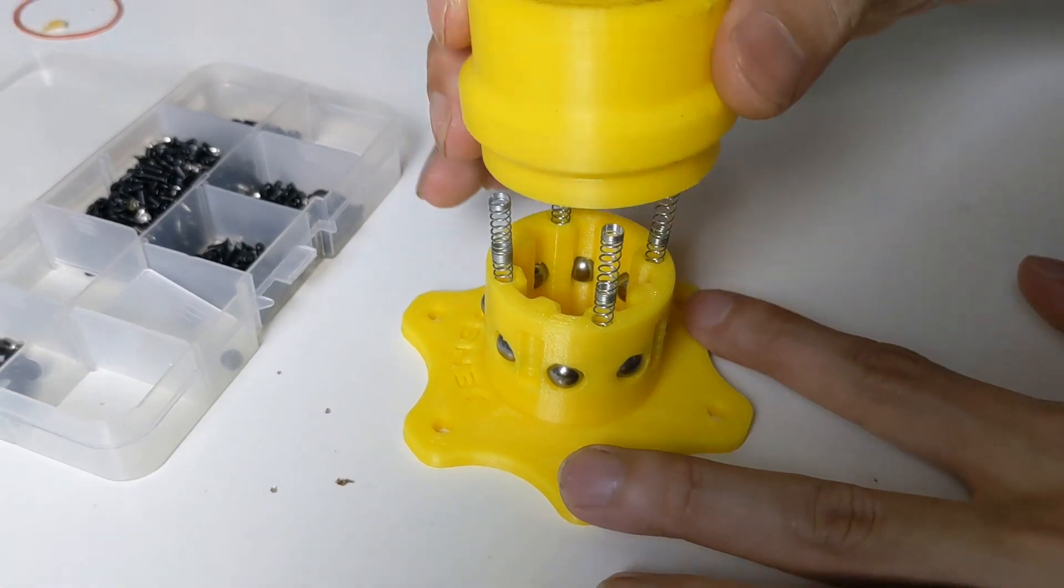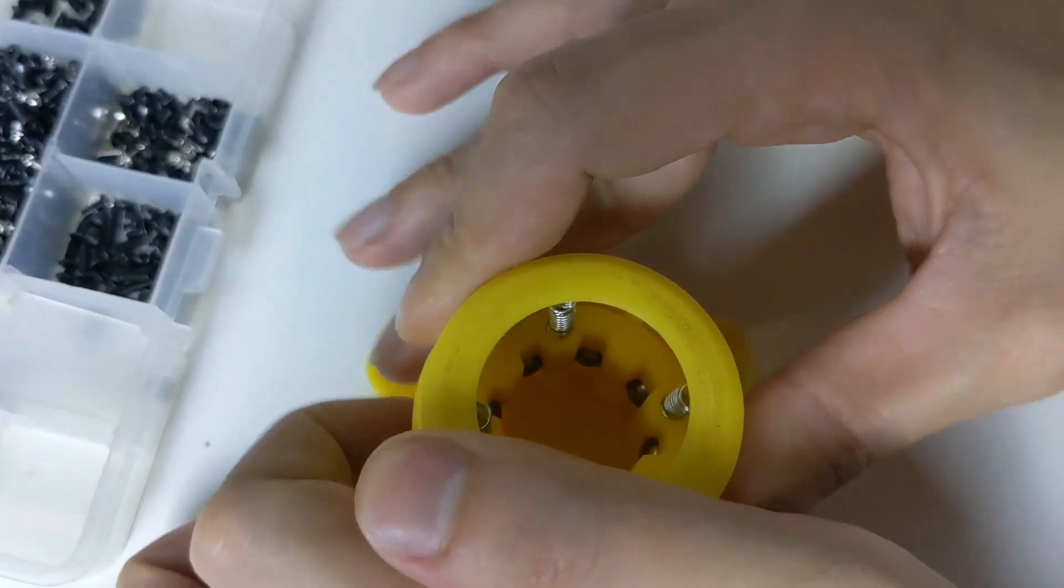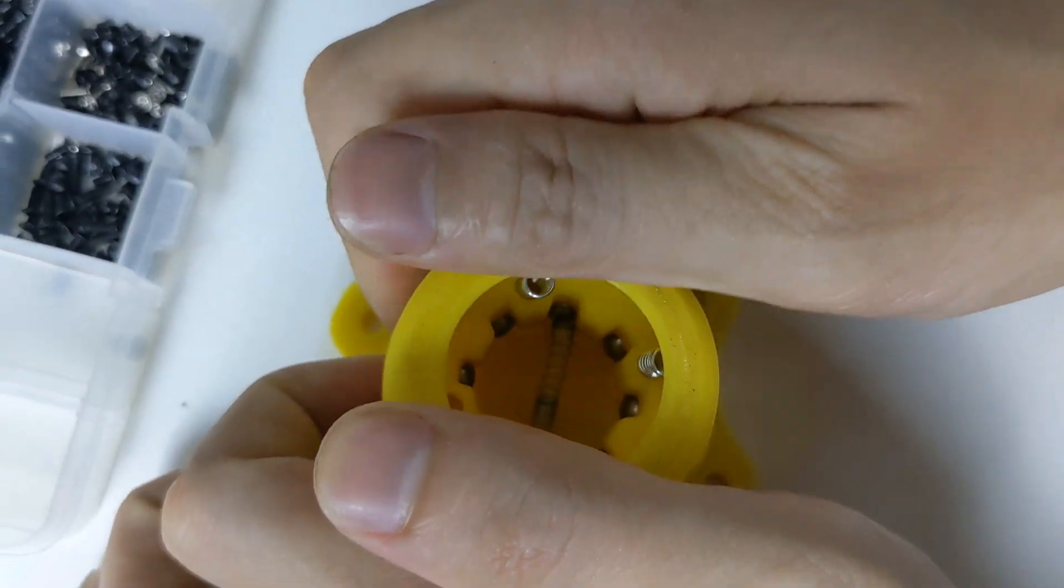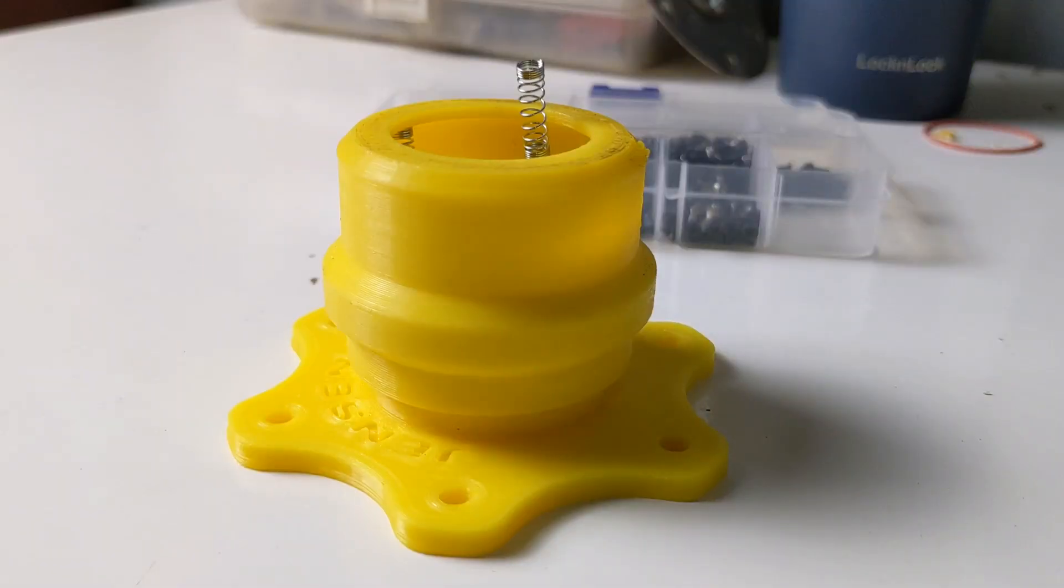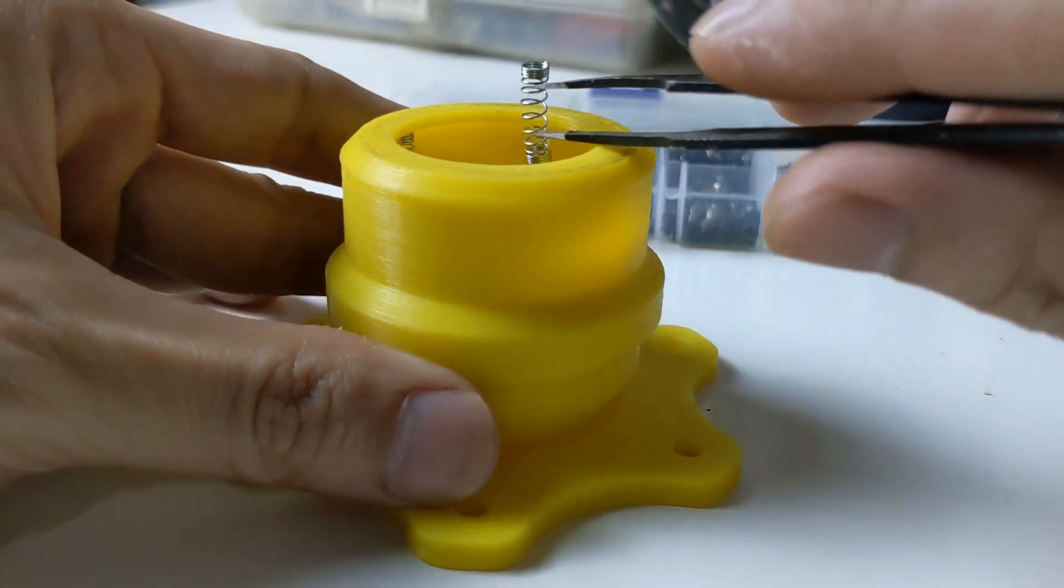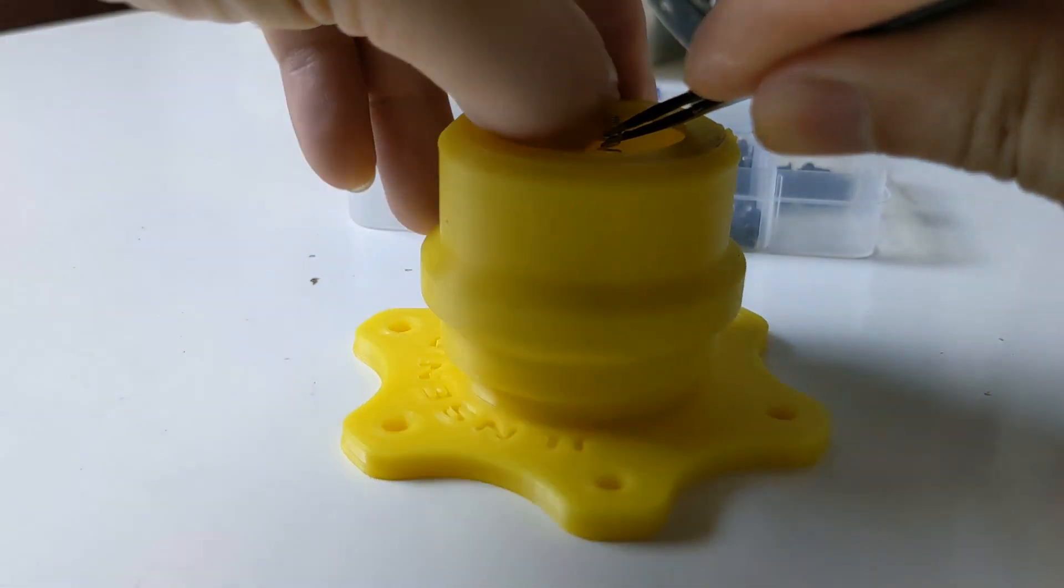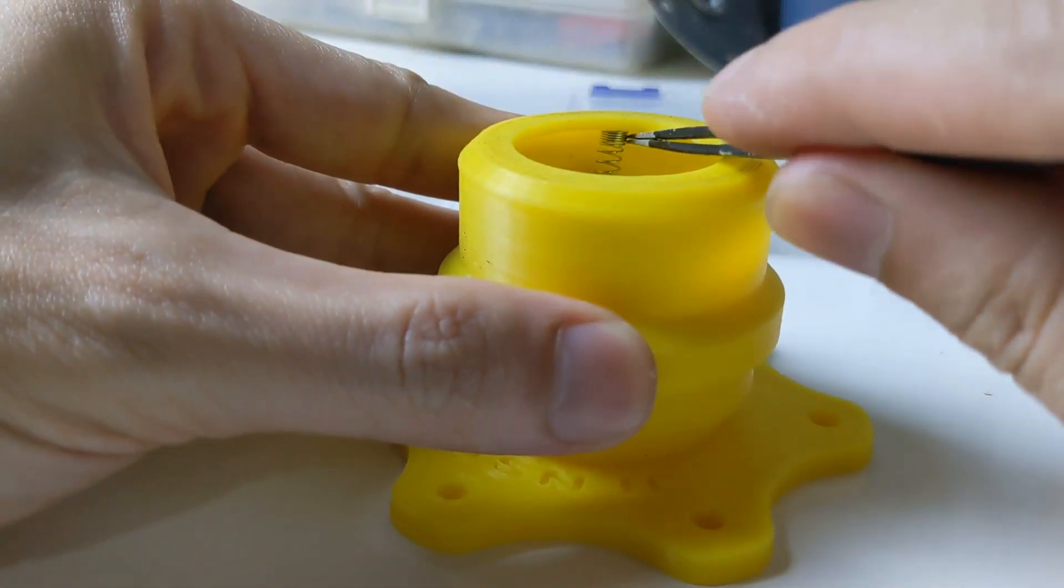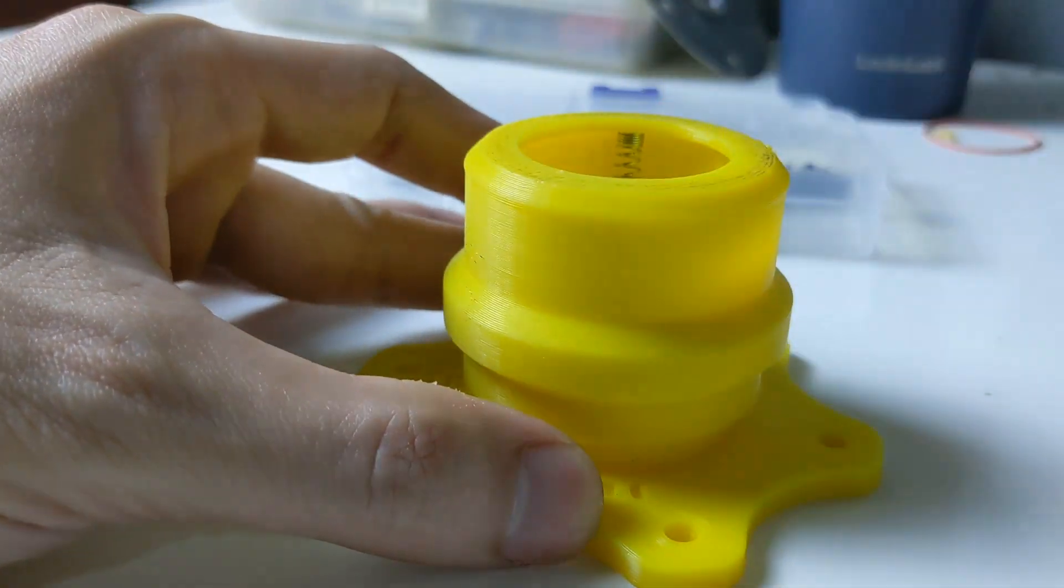Now, I will insert the pin for the slider. This pin, I got from an old band. Now I will insert the slider. When I insert the slider, I see that my design has a problem with the pin. In the next version, I will fix it.